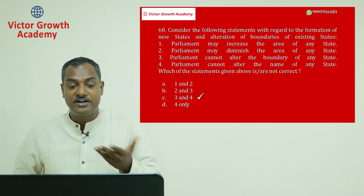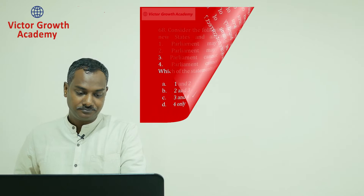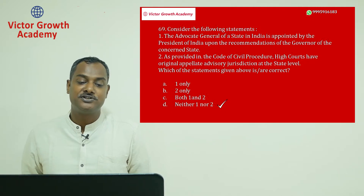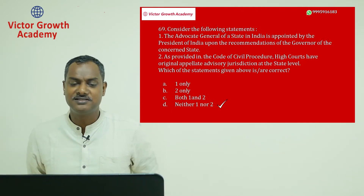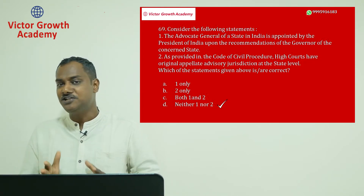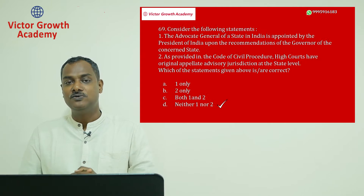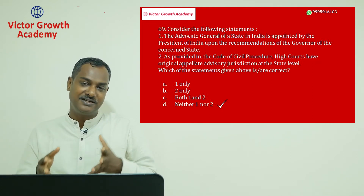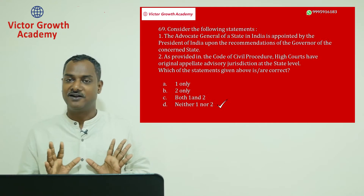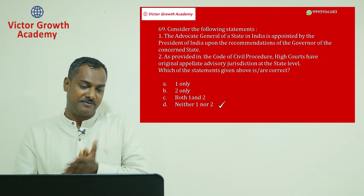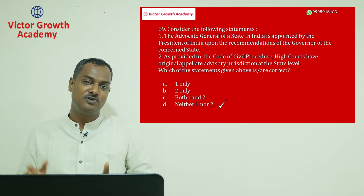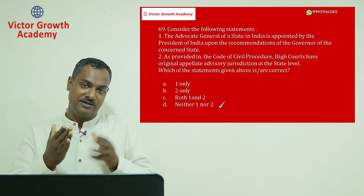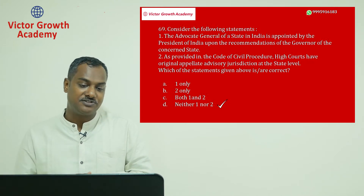Question number 69: the Advocate General of the state is appointed by the President of India upon the recommendation of the Governor. This is a little absurd. Under Article 76, the Attorney General is the first legal officer of the Union government. Similarly, the Advocate General is the first legal officer at the state level, appointed by the Governor — not the President. The Advocate General must be eligible to be appointed as a judge of the High Court.